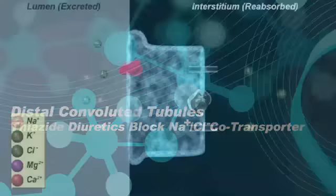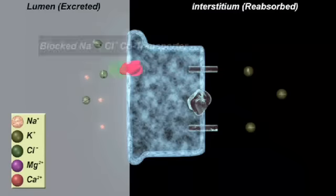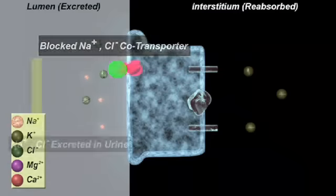However, the thiazide diuretics bind at the chloride binding site and block the sodium chloride cotransporter. This blocks sodium and chloride reabsorption, resulting in net excretion of sodium and chloride.